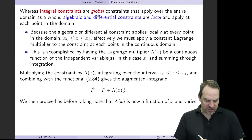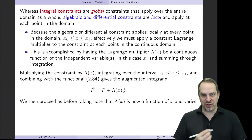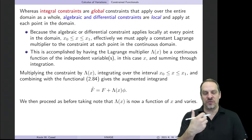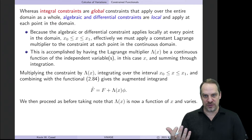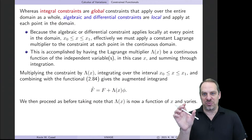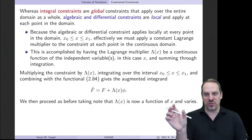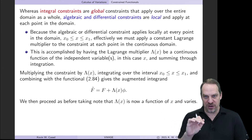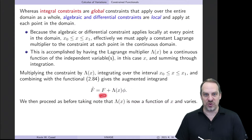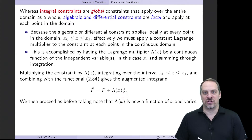The way we accomplish that is by having our Lagrange multiplier, capital lambda, be a function of x, or whatever the independent variable happens to be. We have our phi of u, v, or phi of u, v, u prime, v prime equal to zero — that's some differential equation. We get our augmented integrand by multiplying the differential constraint by the Lagrange multiplier, which is now a function of x, and integrating over the domain. So the augmented integrand f tilde is the integrand of the original functional, capital F, plus lambda of x times the differential constraint phi.